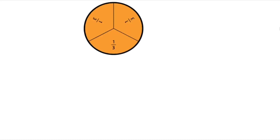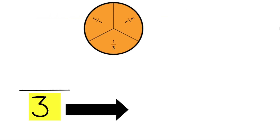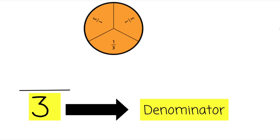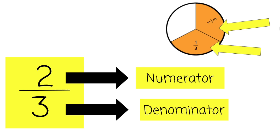Let's look at an example. This circle is divided into three equal parts — one, two, three. So that is our denominator. Now let's look at this circle after removing a third of it. The question is, how many parts of this circle remain? One, two. Two parts of this circle are being considered, so two is our numerator.